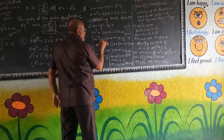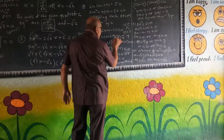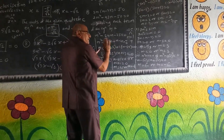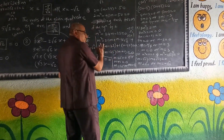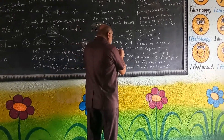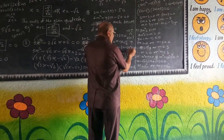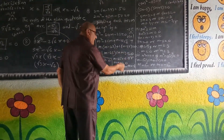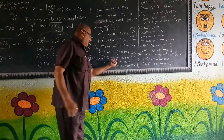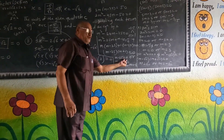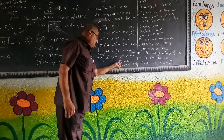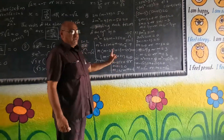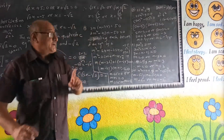Therefore m squared minus 25m plus m minus 25 equals 0. Factoring: m into m plus 1 minus 25 into m plus 1 equals 0. So m minus 25 in the first bracket and m plus 1 in the second bracket. Therefore m equals 25 or m equals minus 1 are the roots of the given quadratic equation.